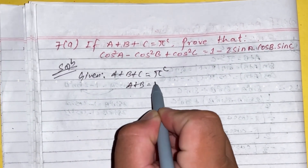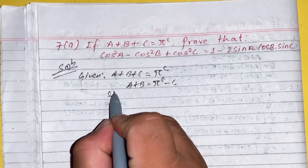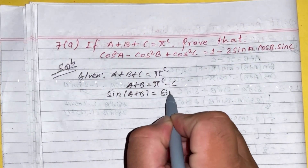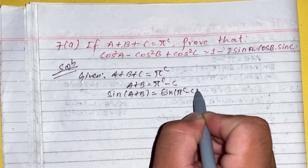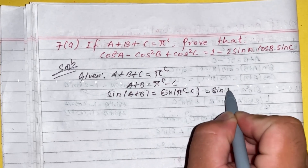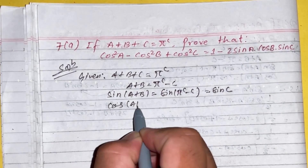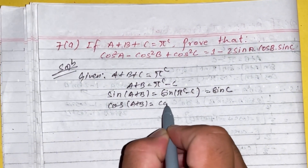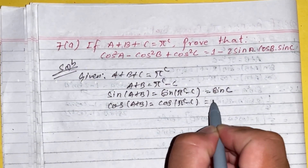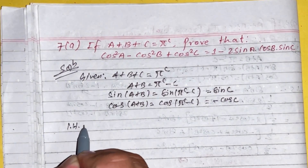Since a plus b plus c equals pi, we have a plus b equals pi minus c. Taking sin on both sides: sin(a+b) equals sin(pi minus c) which equals sin c. Taking cos on both sides: cos(a+b) equals cos(pi minus c) which equals minus cos c.